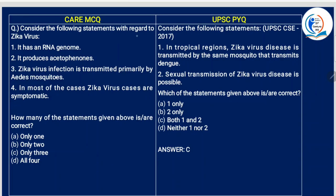Consider the following statements with regard to Zika virus. First: it has an RNA genome — yes. Second: it produces acetophenones. No — acetophenones are not directly produced. An acetophenone is a methyl ketone — acetone in which one methyl group has been replaced with a phenyl group. Directly it will not produce it, so this statement is gone.